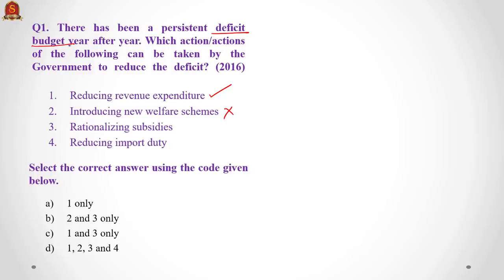If we look at the fact that option 1 is part of the answer, B is already eliminated, and we see that 2 is not part of the answer, so D is also eliminated. We just need to find out if 3 is part of the answer. Option 3 says rationalizing subsidies — not eliminating subsidies, but reducing unnecessary expenditure on subsidies to a bare necessity. That is a correct action, so the answer is C. No technical knowledge required — just understanding that a deficit budget means lack of money.